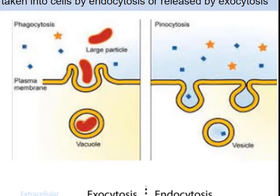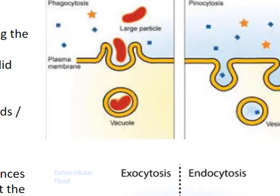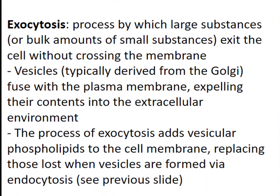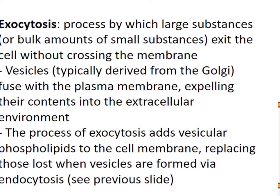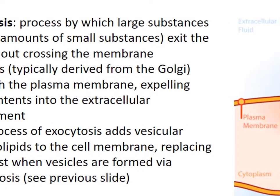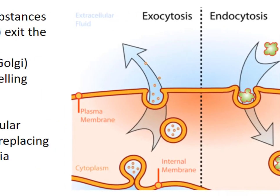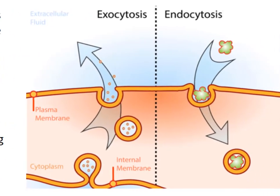Two examples of endocytosis are when white blood cells engulf pathogens and when amoebas engulf their food source. In exocytosis, the cell has created a vesicle which contains a substance bound for outside the cell. Waste products, hormones, or proteins can be contained in secretory vesicles that will fuse with the cell membrane, and this also adds new phospholipids to the cell membrane.